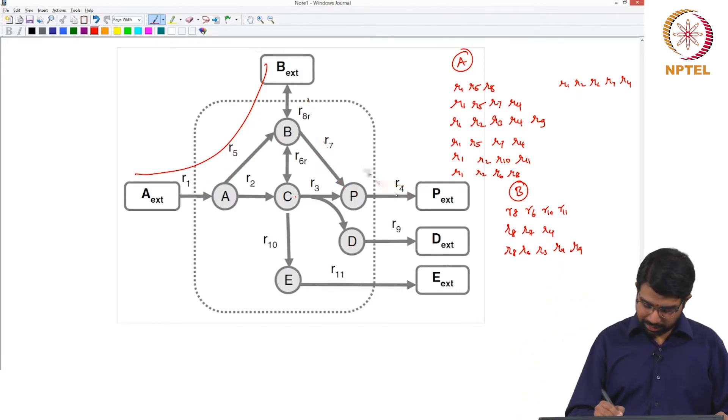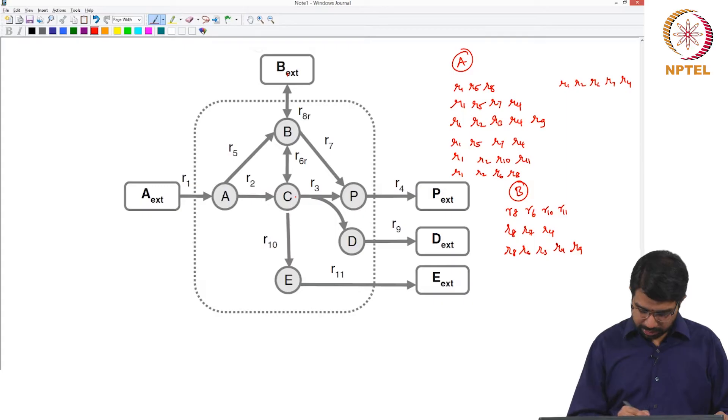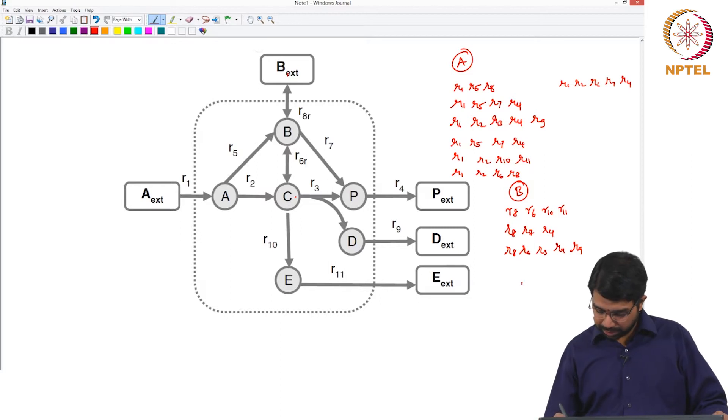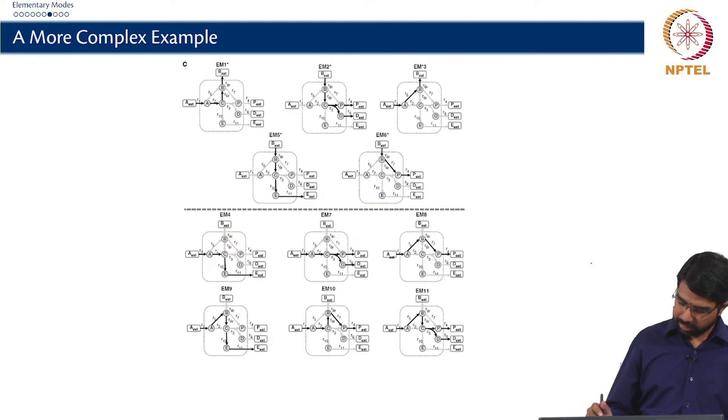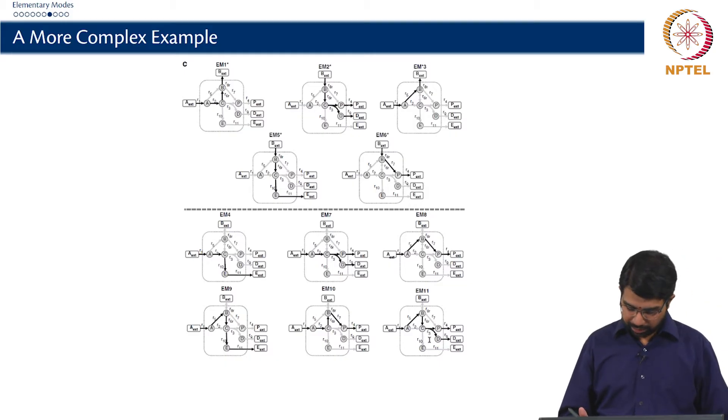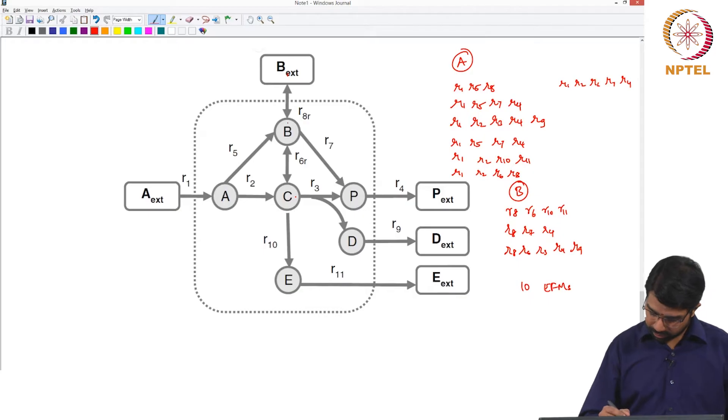So let us see, have we missed out anything else? Let us take a careful look. This is done, this is done, this is done. R1, R2, R6, R8 is done. R1, R2, R6, R7, R4 is done. So we have 3, 6, 7, we have 10 EFMs identified. Let us see if that is correct. There are 11 EFMs, we just seem to have missed out 1. I think that is the one that we missed.